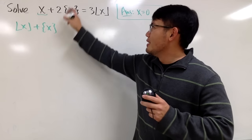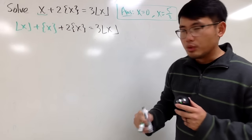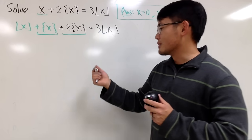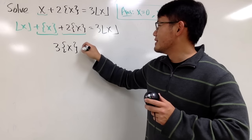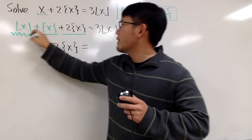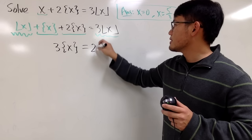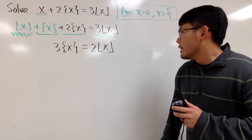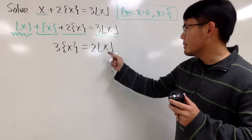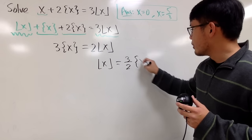Once you use this identity, you can combine like terms with others as well. We have one fractional part of x, plus two fractional parts of x, so we can just say this is three fractional parts of x. Then I can subtract the floor of x on both sides: three floor of x minus floor of x gives two floor of x. Now I would like to isolate the floor of x, so dividing both sides by two, we get floor of x equals three over two times the fractional part of x.